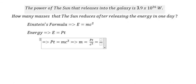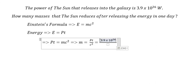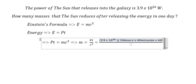P is this number (3.9 × 10²⁶). We need to convert one day into seconds: one day has 24 hours, one hour has 60 minutes, and one minute has 60 seconds.